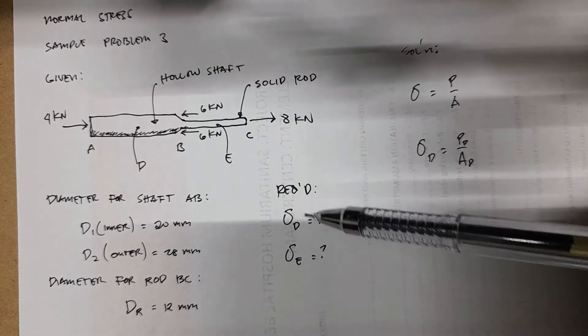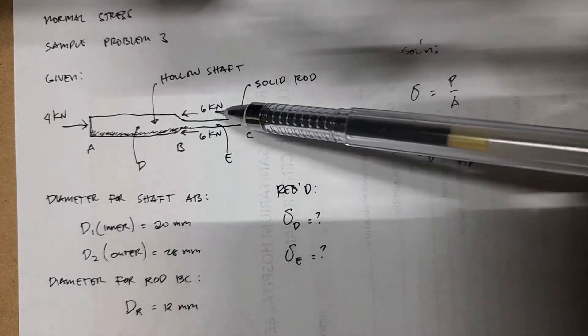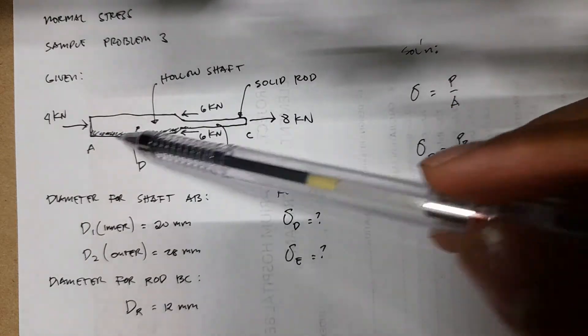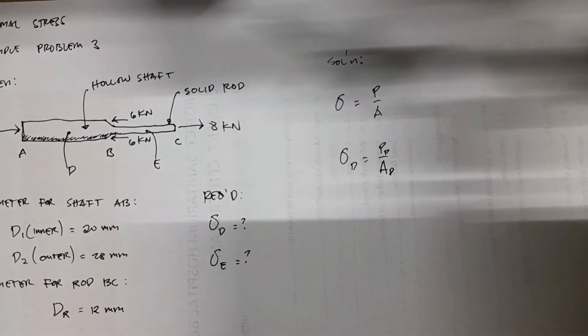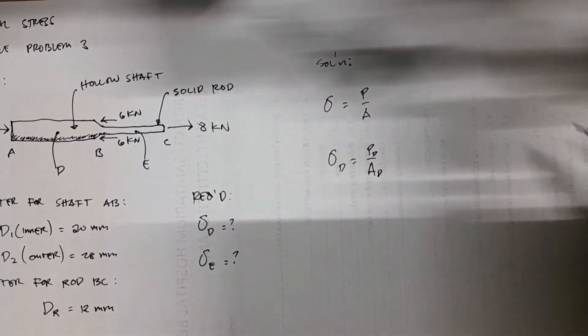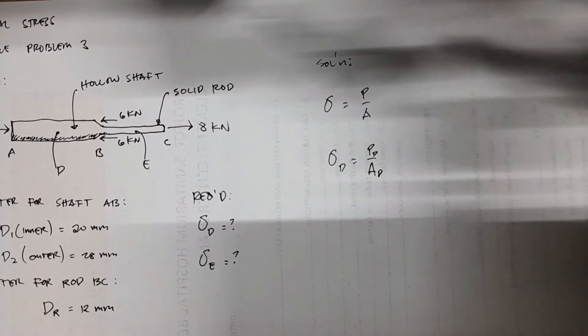So again, the required are the normal stresses at point D and point E, somewhere in the section between A and B and between B and C. So again, the solution, our working equation for stress is sigma equals force over area.